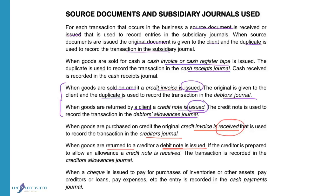If the creditor is prepared to allow an allowance, a credit note is received from the creditor. So if he is satisfied with the reason why we asked for an allowance, he will issue a credit note. So when we buy goods, we receive an invoice. When the creditor is prepared to reduce our account, we receive a credit note. The transaction is recorded in the creditor's allowances journal.